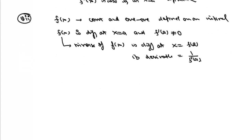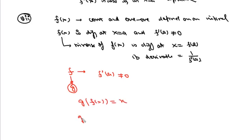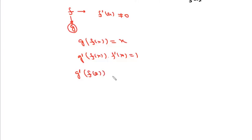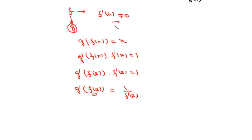Intuitively, if g is the inverse function of f, then g(f(x)) = x. Differentiating both sides gives g'(f(x)) · f'(x) = 1. Replacing x with a, we get g'(f(a)) · f'(a) = 1, so g'(f(a)) = 1/f'(a), provided f'(a) ≠ 0. That is, the derivative of the inverse function at f(a) equals 1/f'(a).